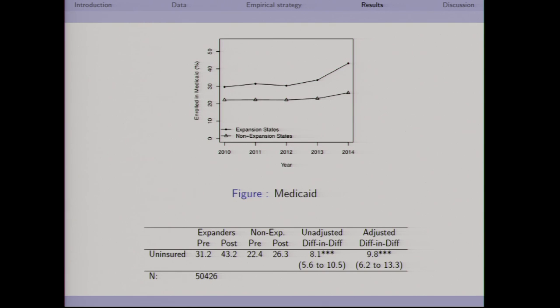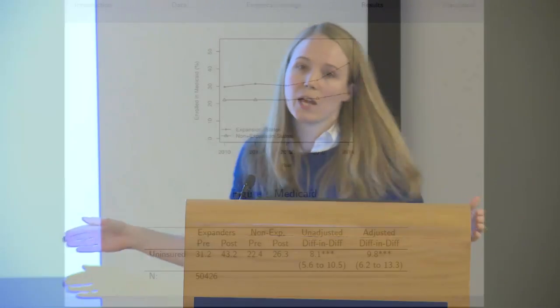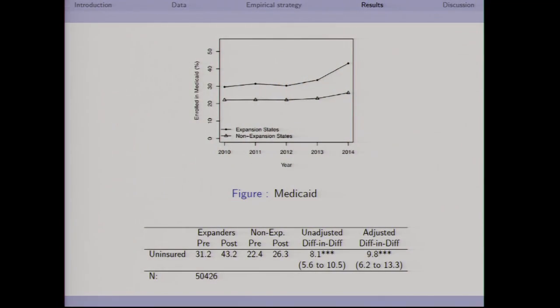The next outcome is the fraction with Medicaid coverage. Again, we see a slight increase even in non-expansion states, possibly from increased awareness or take-up due to the mandate. But there's a much larger increase in Medicaid enrollment in states that actually expanded — between an 8 and 10 percentage point increase in Medicaid enrollment in expansion states relative to non-expansion states.